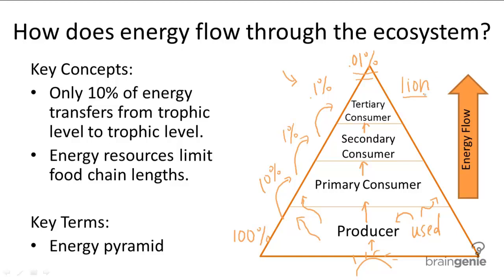But it doesn't get as much energy out. This is interesting because you can connect it to the human diet as well. Many studies show that eating more vegetables provides a more energetic diet. One way to look at that is because humans are essentially primary consumers when they eat vegetables, and secondary or tertiary consumers when they eat meat. And as we just learned, primary consumers have a more efficient intake of energy — they get 10% from producers.